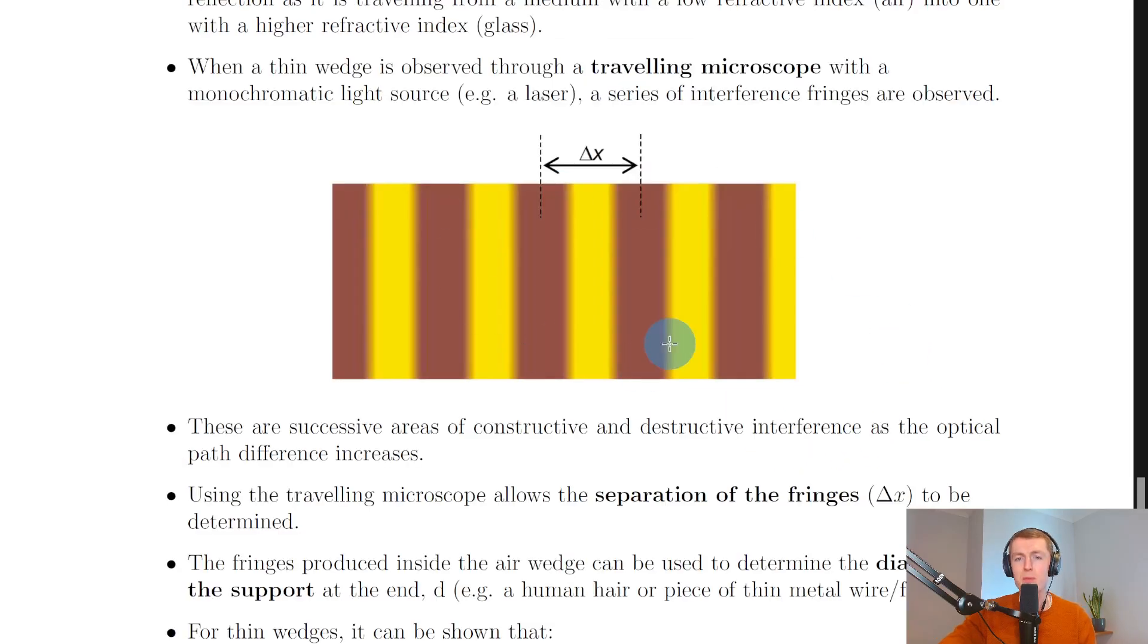Looking back at the picture, just be wary of if you are measuring across multiple fringe separations, that you make sure you divide by the right number to get Δx. Rather than measuring the distance between two adjacent fringes, we can reduce the uncertainty in Δx by measuring across many fringe separations.